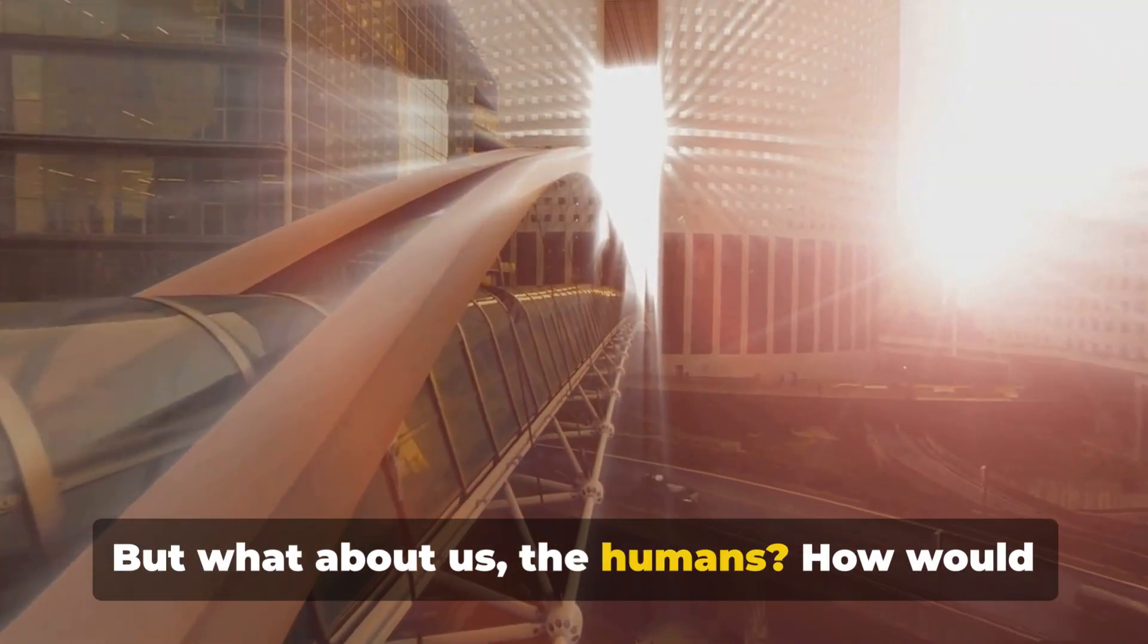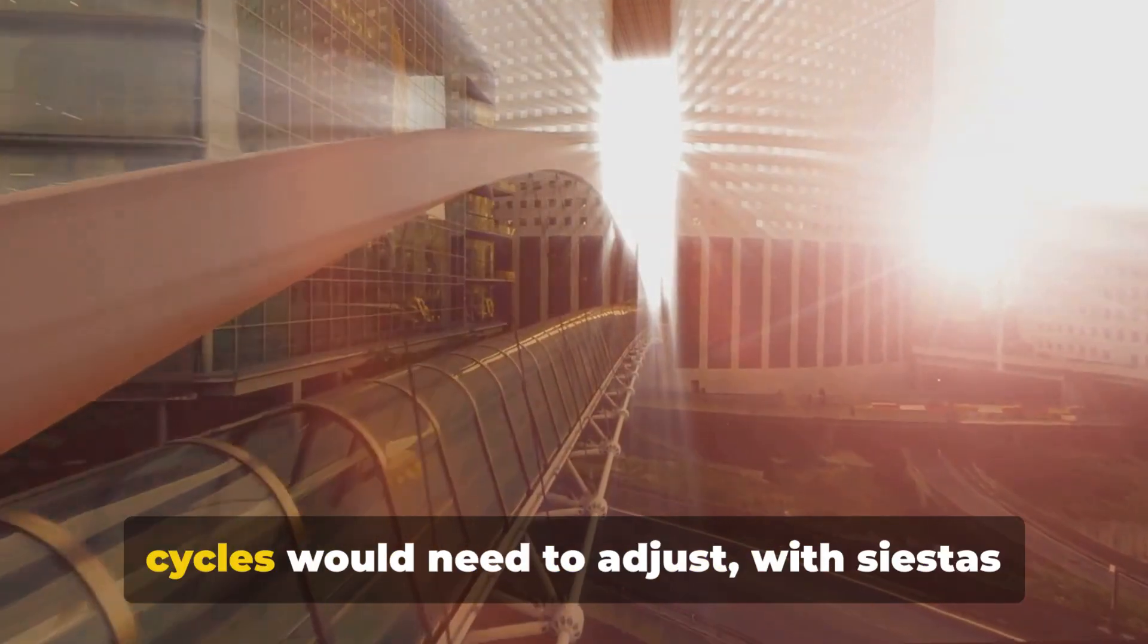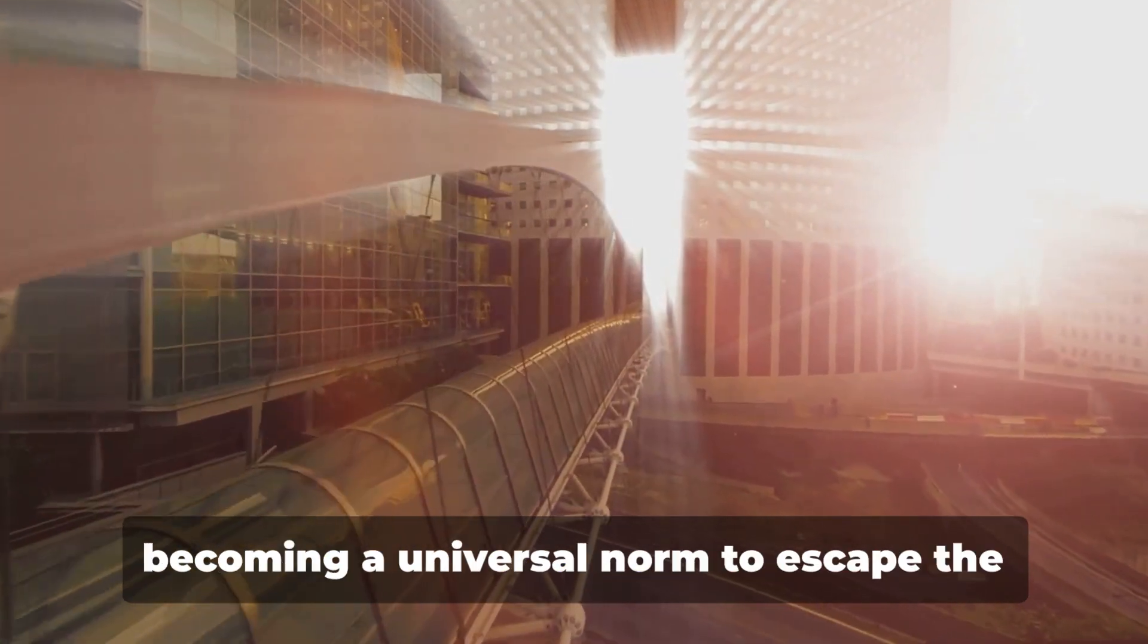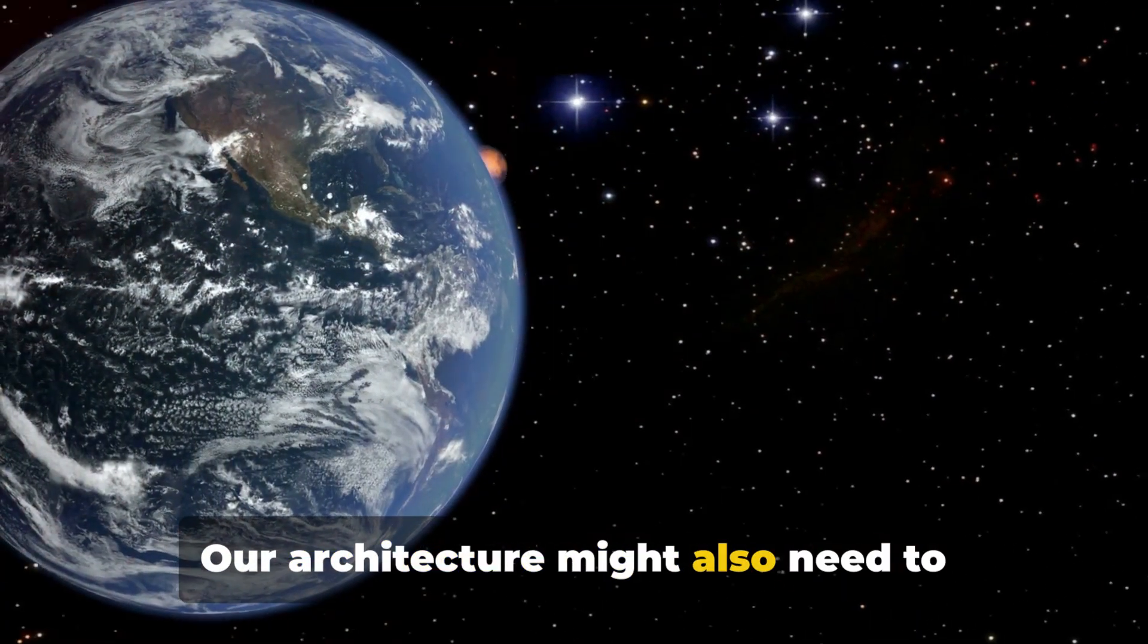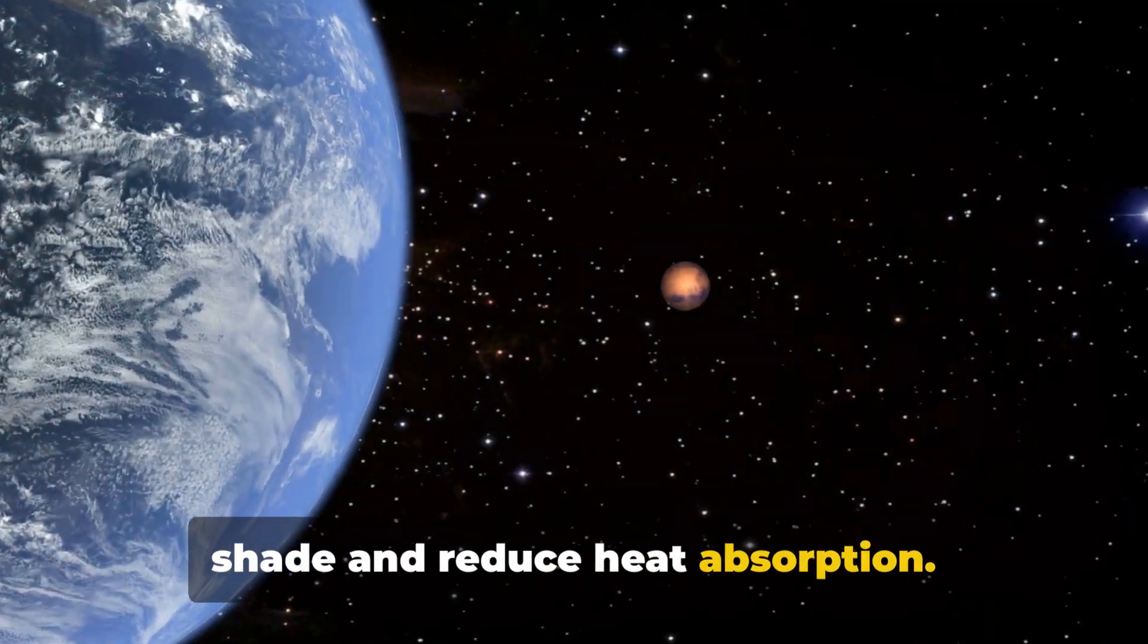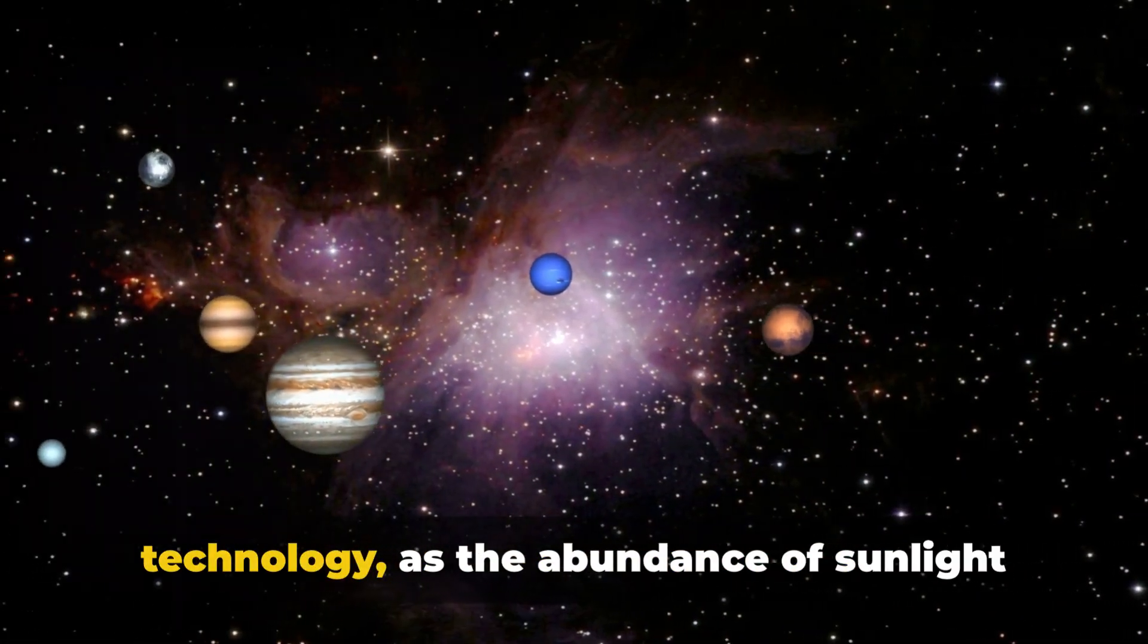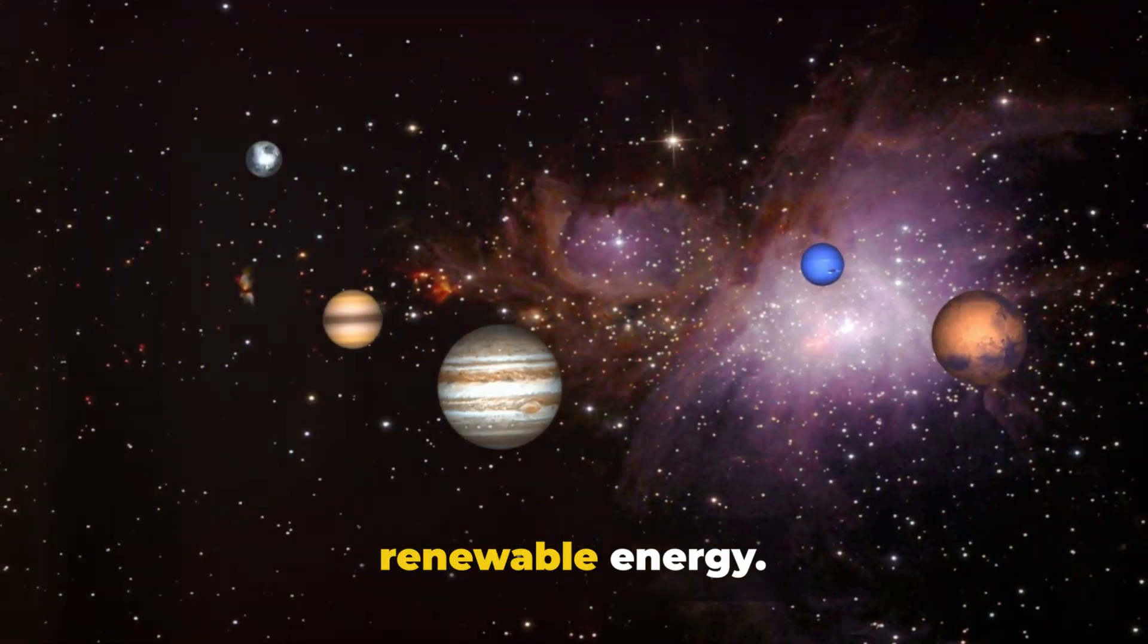But what about us, the humans? How would our lifestyles change to cope with the constant daylight? Perhaps our sleep cycles would need to adjust with siestas becoming a universal norm to escape the midday heat. Our architecture might also need to evolve with buildings designed to provide shade and reduce heat absorption. We may also see advancements in solar technology, as the abundance of sunlight would provide an endless source of renewable energy.